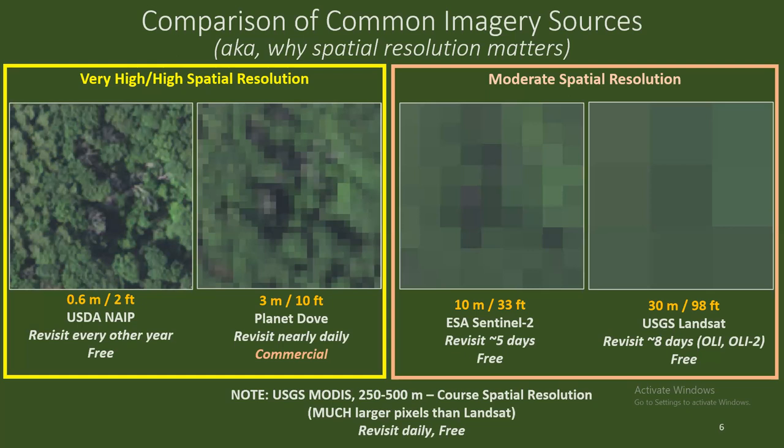There is one more category called coarse spatial resolution. The main sensor you'll see in this category is MODIS, and each pixel in MODIS imagery represents 250 to 500 meters on the ground — these are huge pixels. It allows MODIS to cover a lot of area, but it's really a landscape and regional level sensor. It'll give you an idea of where a severe disturbance is severe and large, but the level of detail is pretty limited. We're going to talk more about all these throughout this presentation.